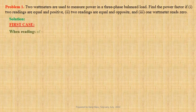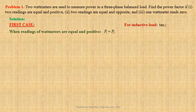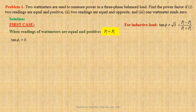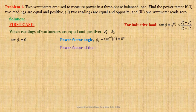First case: when readings of wattmeters are equal and positive, that is P1 equals P2. For inductive load, tan φ equals root 3 times (P1 − P2) divided by (P1 + P2). Therefore, in this case, tan φ equals 0. Power factor angle φ equals tan⁻¹(0), that is 0 degrees. Power factor of the load, cos φ equals cos(0°), that is equal to 1. For unity power factor load, wattmeter readings are equal and positive.